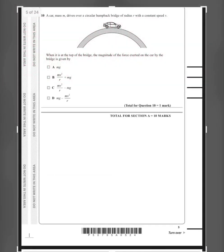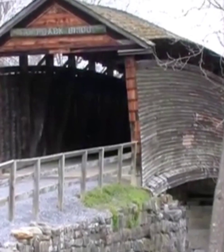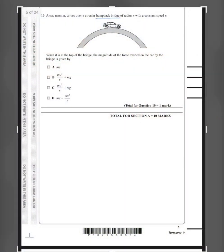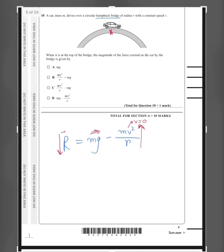Question ten: a mass m drives over a circular humpback bridge of radius r at constant speed v. At the top of the bridge, the reaction force exerted on the car by the bridge is given by mg − mv²/r. When the car is at rest, v = 0, so the reaction force equals mg. As speed increases, the centripetal term mv²/r increases, reducing the reaction force. When mv²/r exceeds mg, the car launches into the air, which can cause an accident.